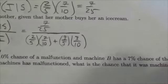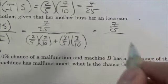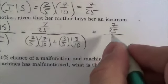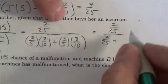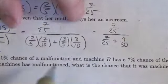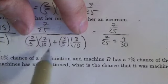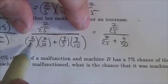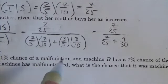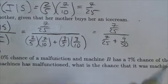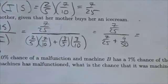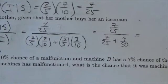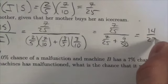So this becomes seven-twenty-fifths over — putting this all together — seven-twenty-fifths plus nine-fiftieths. The issue here is that the probability of her getting an ice cream is a little bit more complicated because there are two events, two different ways that she might get this ice cream, either when she's shopping or not shopping. So the easiest thing to do is simplify using our calculators: seven-twenty-fifths divided by seven-twenty-fifths plus nine-fiftieths. And this reduces down to fourteen-twenty-thirds.